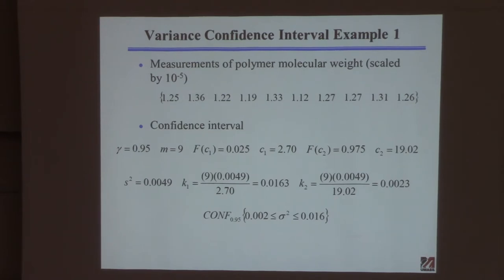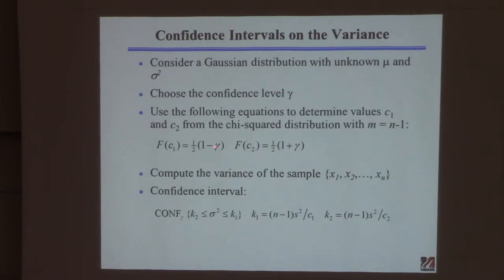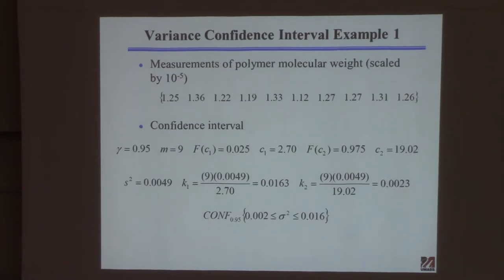If you want to know something about the variance, you need a lot more samples — I'd say around 50. You can still report the value of the variance, but the confidence interval is useful because it tells whoever is looking at your data that you don't have a lot of confidence in it. Variance is hard to accurately estimate unless you have a lot of samples.